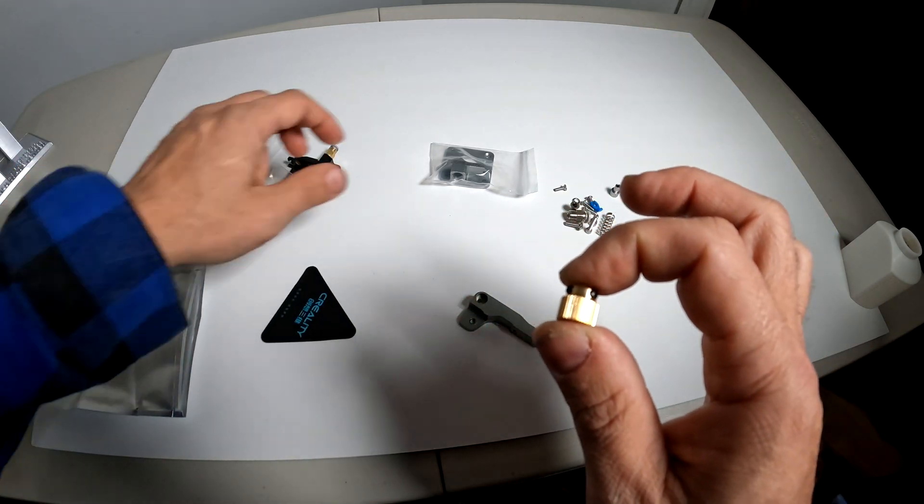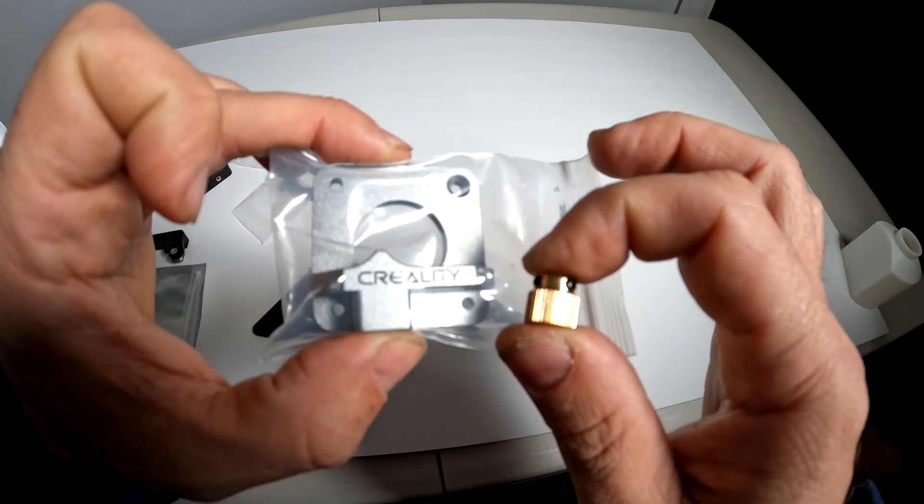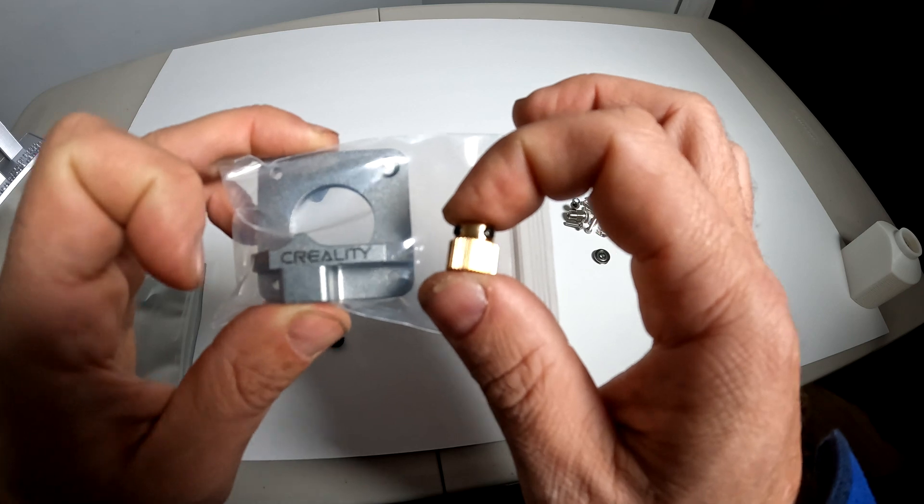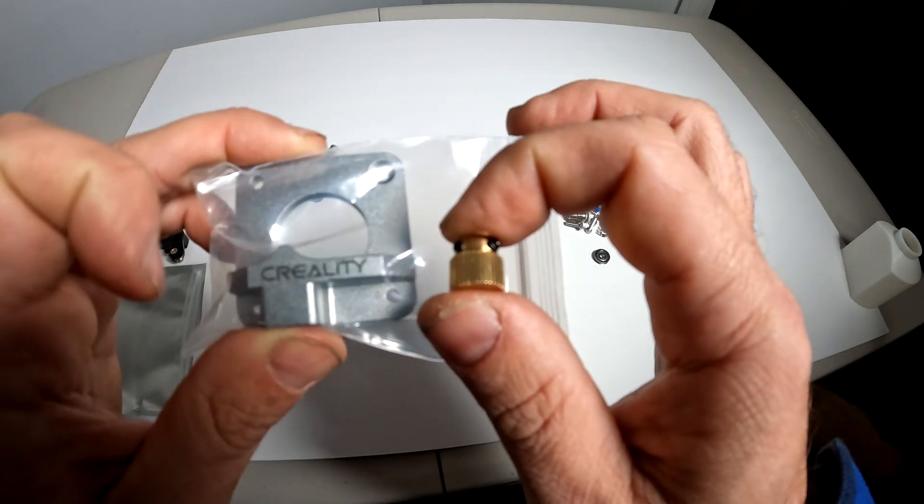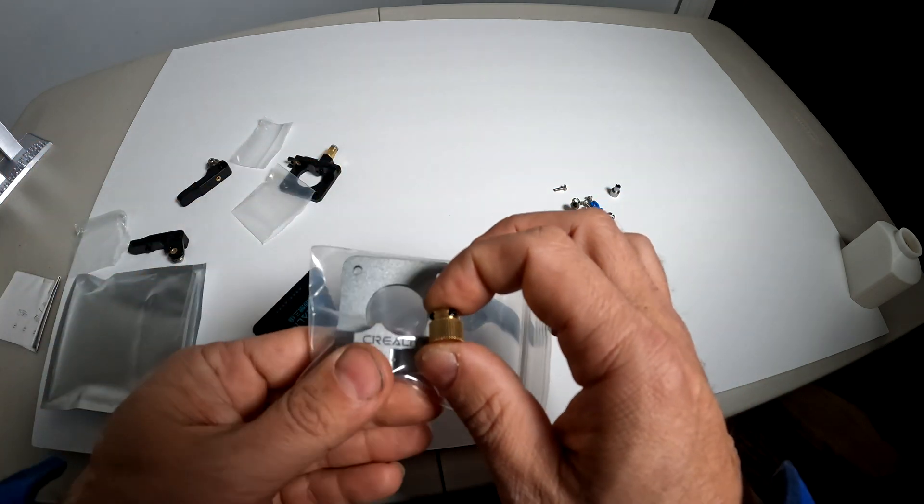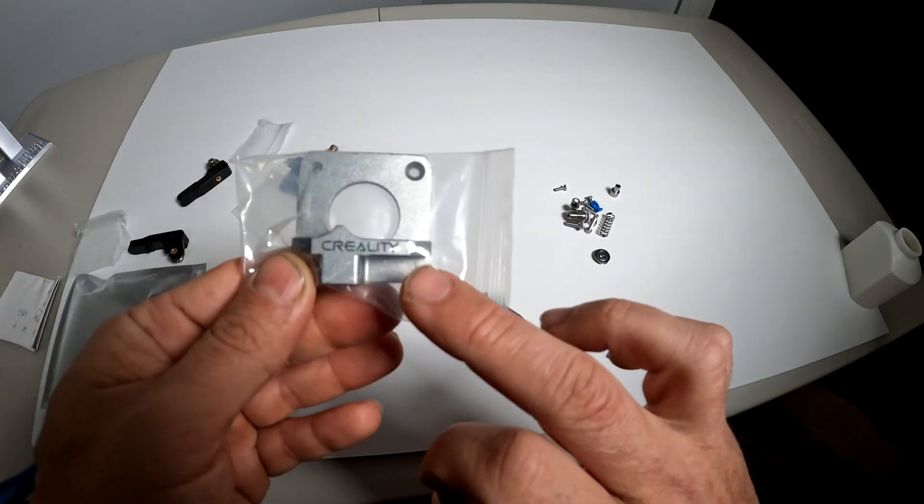So get online, get the all-metal extruder from Creality, change the extruder, change the gear and eliminate this as a cause for under-extrusion in your Creality 3D printers. I'll provide a link in the description below to this exact extruder.